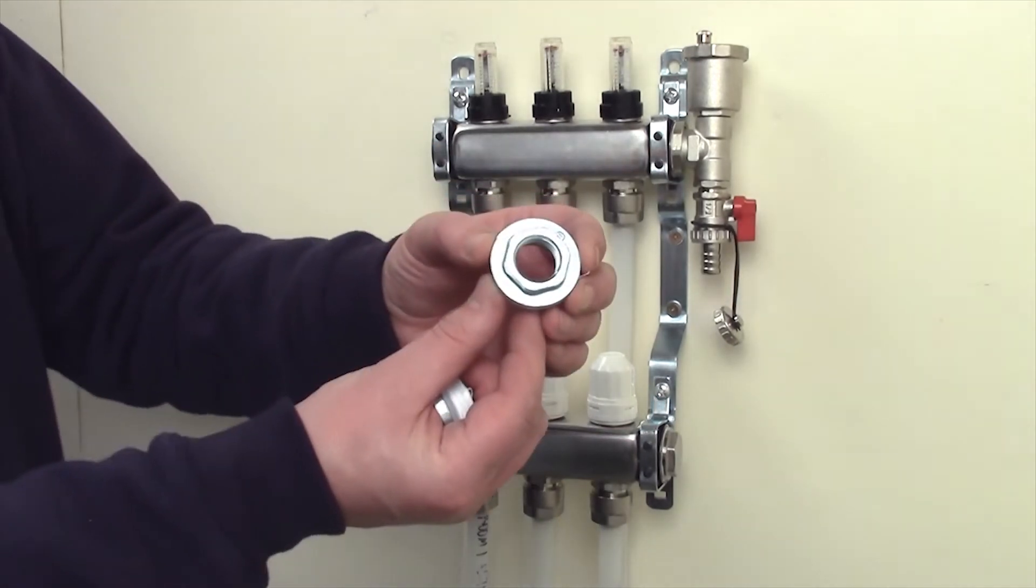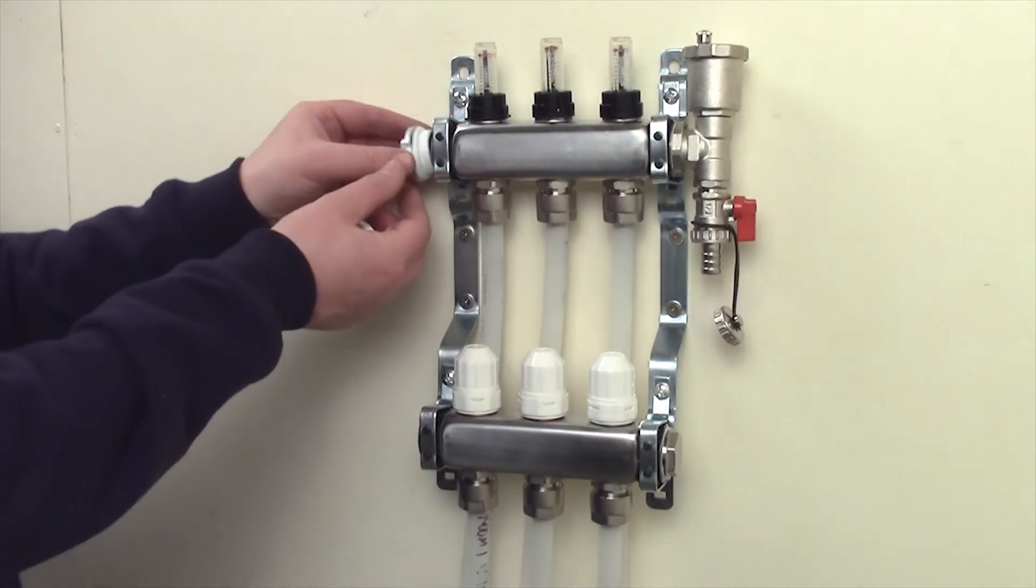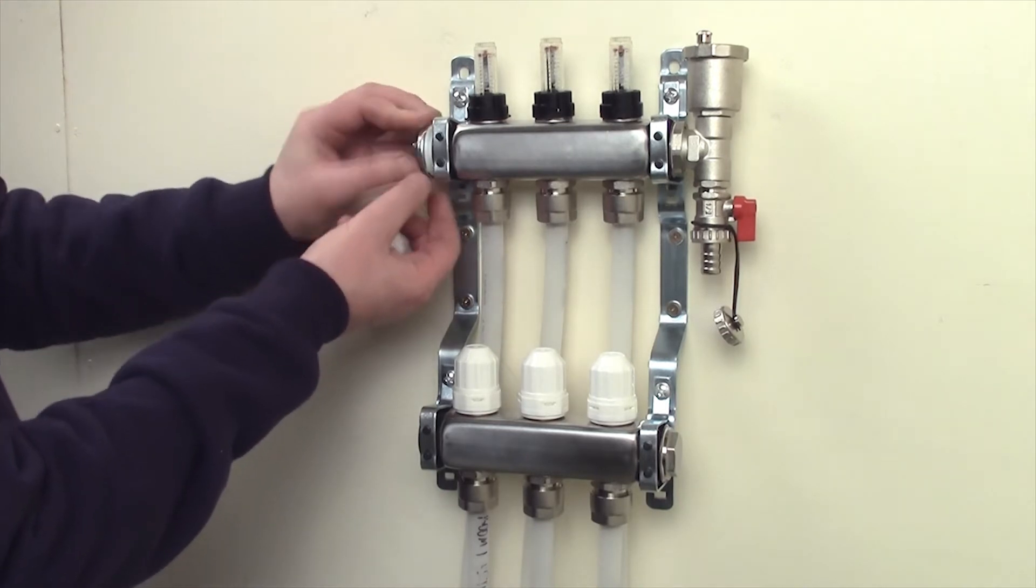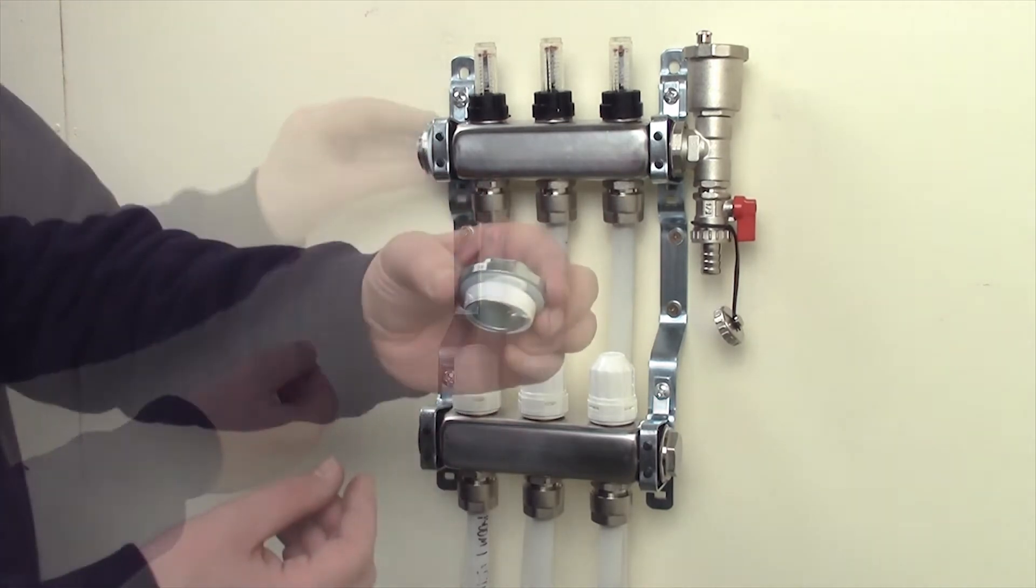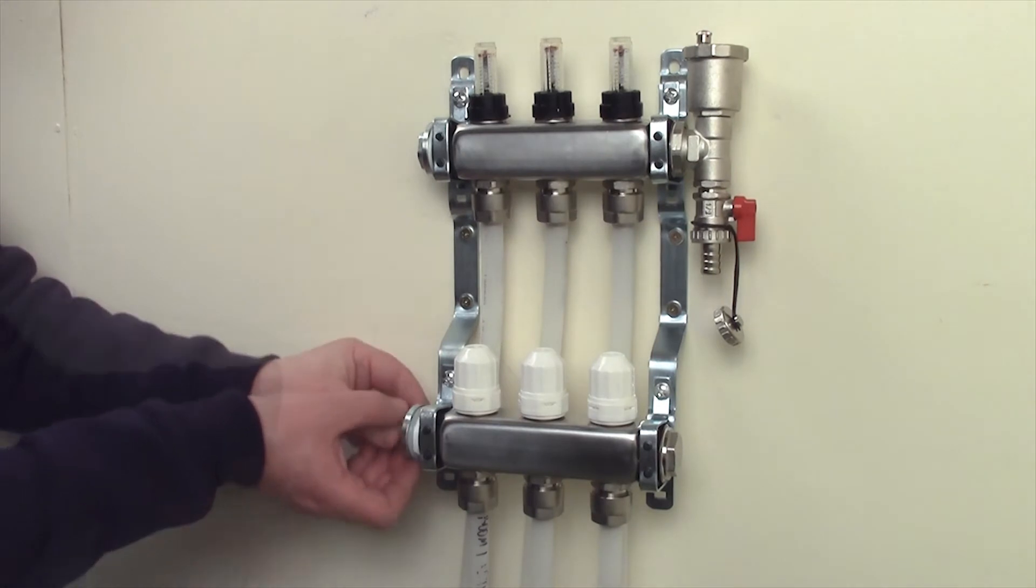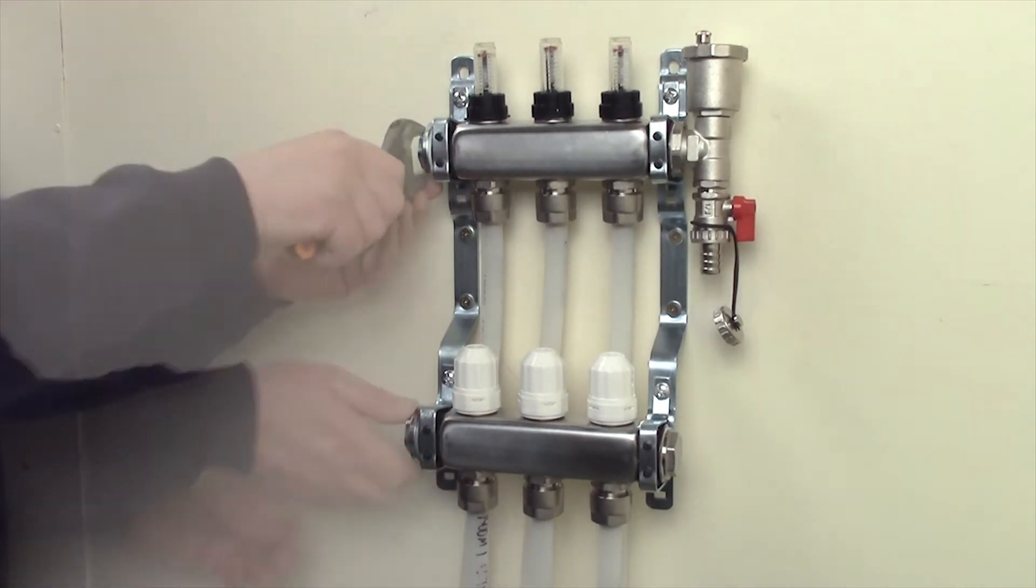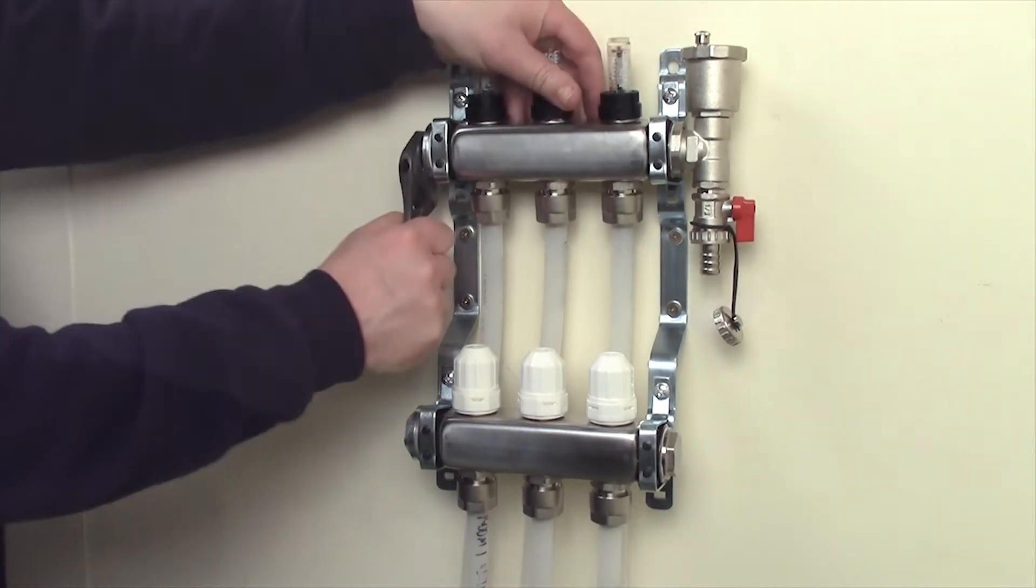Fit the one and a half inch bushes to both the top flow bar and bottom return bar left hand ends. Ensure all the connections are tight using a suitable spanner.